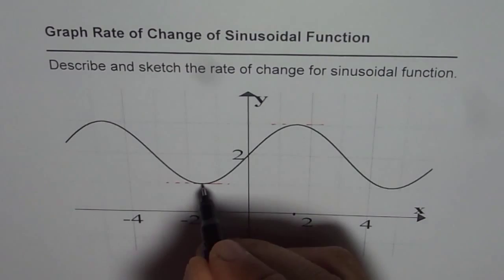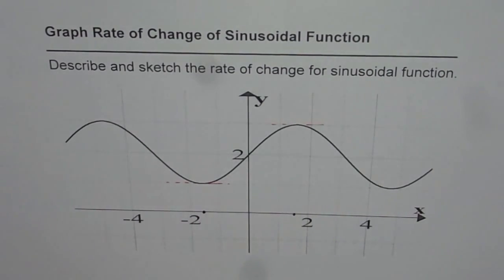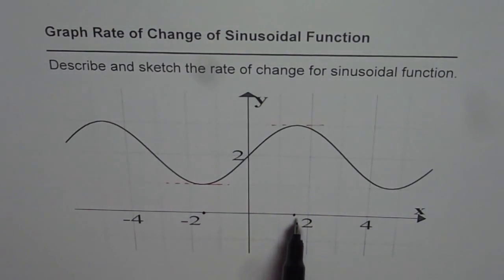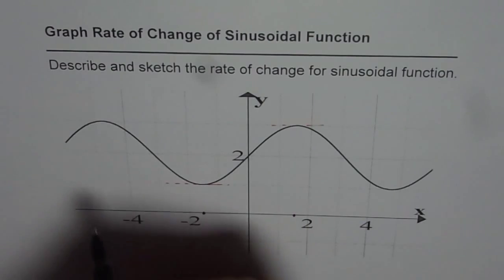Let me plot these points. These are the points which correspond to the graph of rate of change for the sinusoidal function. We will get zeros at these extremes.